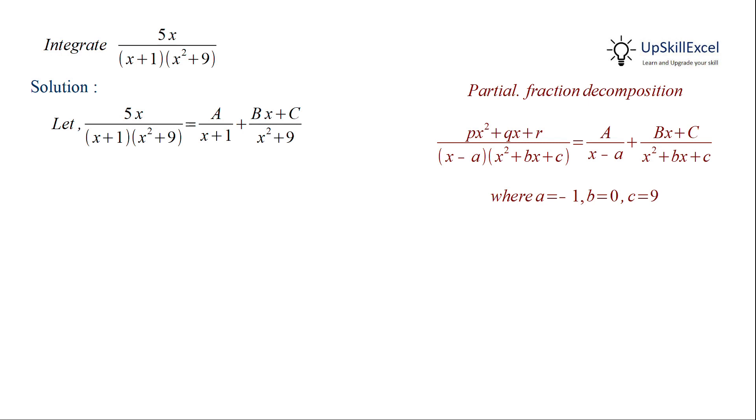So our function becomes a over x plus 1 plus bx plus c over x squared plus 9. Now we can add the two terms and then equate the numerator to get 5x is equal to a multiplied by x squared plus 9 plus bx plus c multiplied by x plus 1.